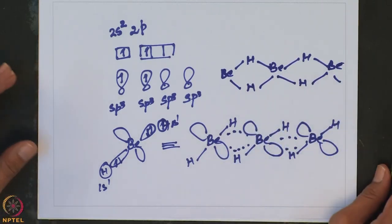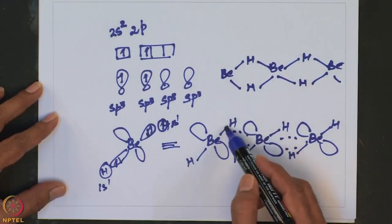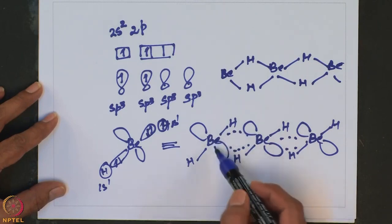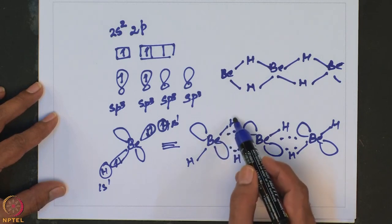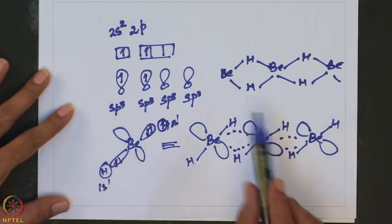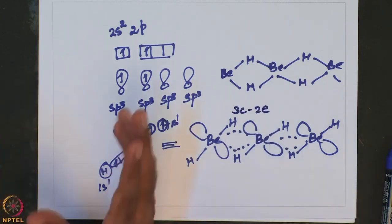This is how one can explain the polymeric chain formed in beryllium hydride to overcome electron deficiency. The Be-H bond acts as a Lewis base donating electrons, while the empty sp3 orbital on the next beryllium acts as a Lewis acid. Each beryllium essentially acts as both Lewis base and Lewis acid, leading to the formation of 3-center 2-electron bonds.